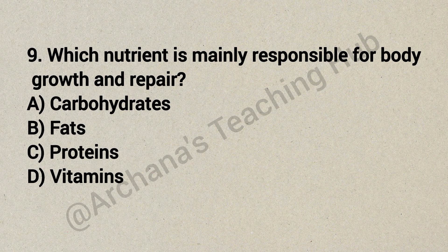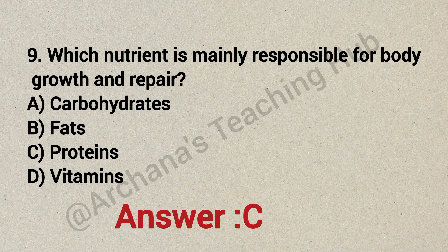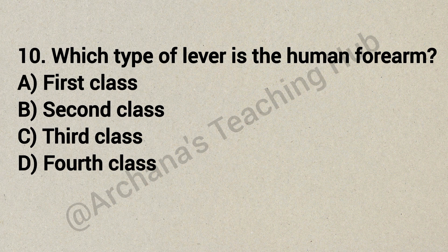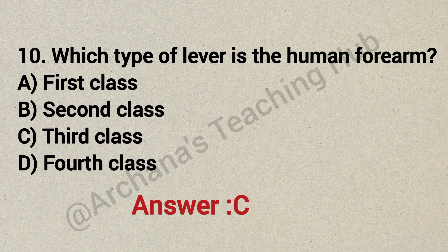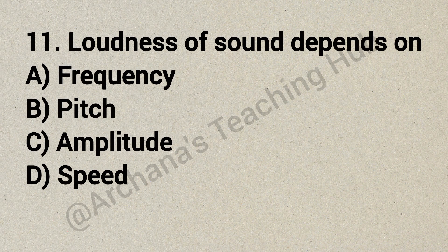Question 9: Which nutrient is mainly responsible for body growth and repair? Option A: carbohydrate, Option B: fats, Option C: protein, Option D: vitamins. Correct answer is Option C: proteins. Question 10: Which type of lever is the human forearm? Option A: first class, Option B: second class, Option C: third class, Option D: fourth class. Correct answer is Option C: third class.